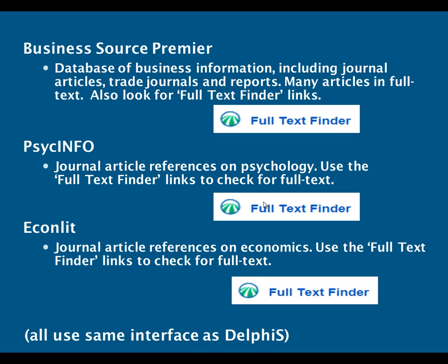If you're interested in economics, we have a database called EconLit, which is the main economics literature database. It also has full text finder links. The good thing about all three of these databases — Business Source Premier, PsycINFO, and EconLit — is that they use the same interface as Delphys. So if you've used Delphys before, you will recognise these database interfaces and be able to use them in quite a similar way.